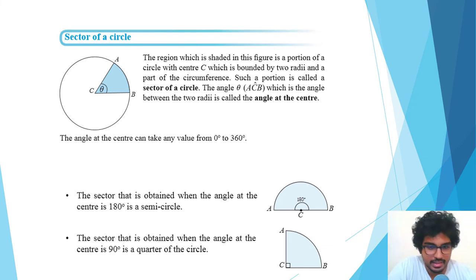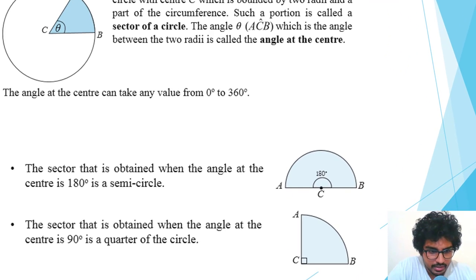The angle at the center can take any value from 0 to 360. The sector that is obtained when the angle at the center is 180 degrees is a semicircle. It's obvious—if the complete circle takes a 360 degree angle, then half should take half of that, which is 180.